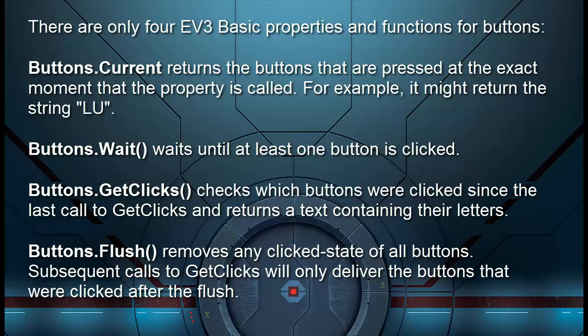Buttons.wait waits until at least one button is clicked. Buttons.getClicks checks which buttons were clicked since the last call to getClicks, and returns a text containing their letters. Buttons.flush removes any clicked state of all buttons; subsequent calls to getClicks will only deliver the buttons that were clicked after the flush.